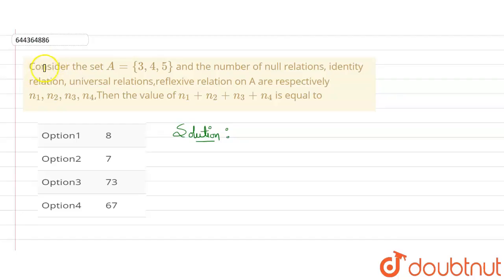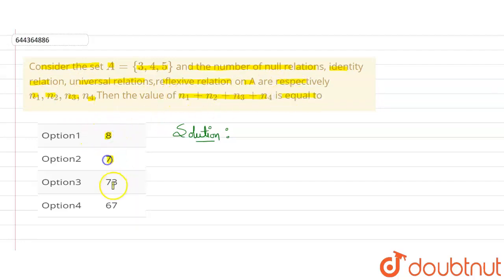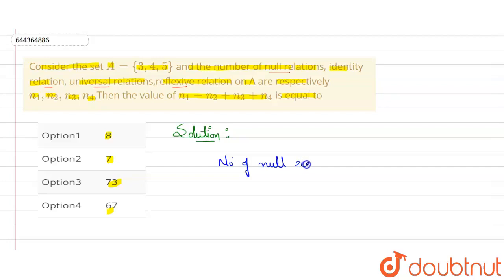Hello everyone. In this question it is given: consider the set A which is given by {3, 4, 5}. The number of null relations, identity relations, universal relations, and reflexive relations on A are respectively N1, N2, N3 and N4. We need to find the sum N1 + N2 + N3 + N4. The options are 8, 7, 73 and 67. N1 represents the null relation, N2 represents identity, N3 universal, and N4 reflexive relation.